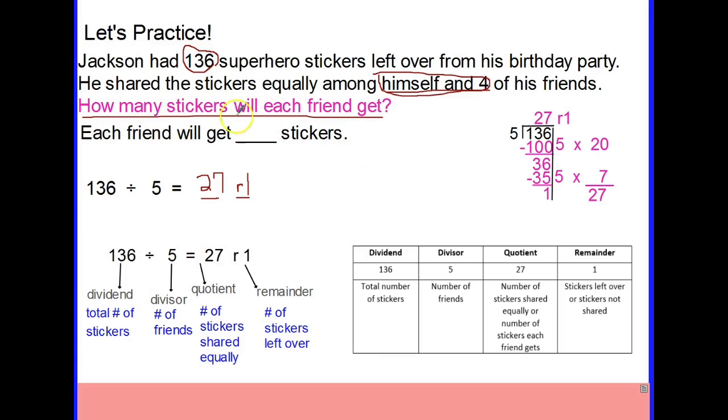So when I answer this question, how many stickers will each friend get? When I look at all my pieces, I know that 27 is the number of stickers shared equally or the number of stickers each friend will get. Each friend will get 27 stickers, not 27 remainder one, because that is not what this question is asking. They will have 27 stickers shared equally, so we will not use the remainder in our answer. Our final answer will not have the remainder of one because it does not help us answer this question. Each friend will get 27 stickers.